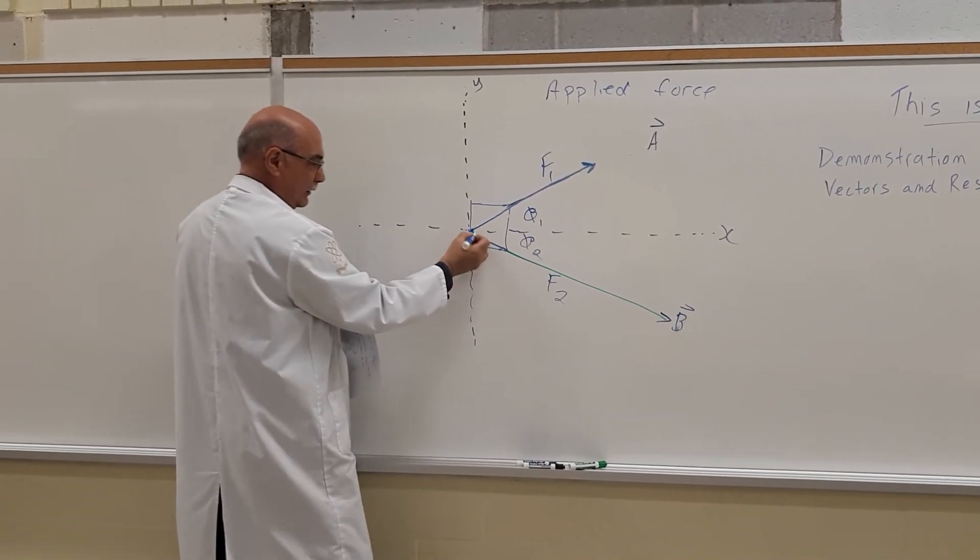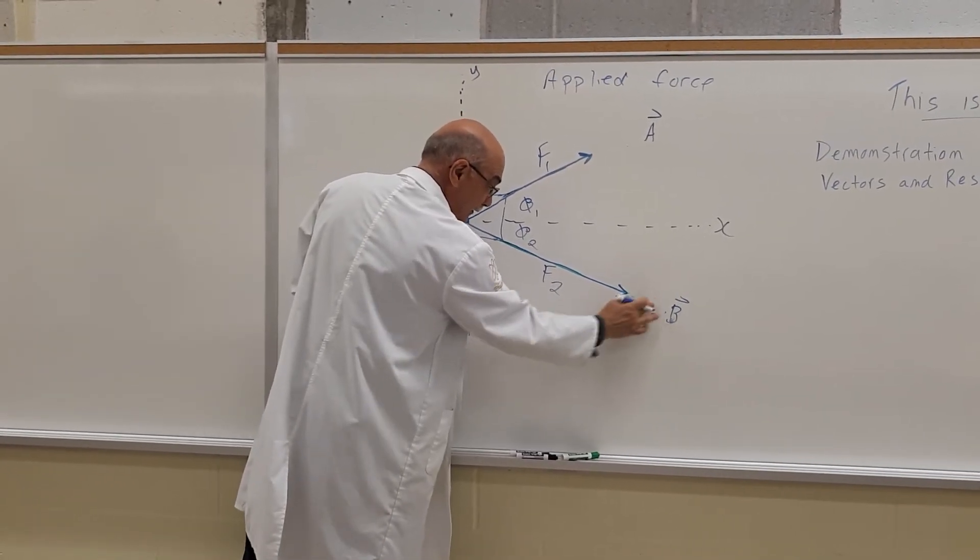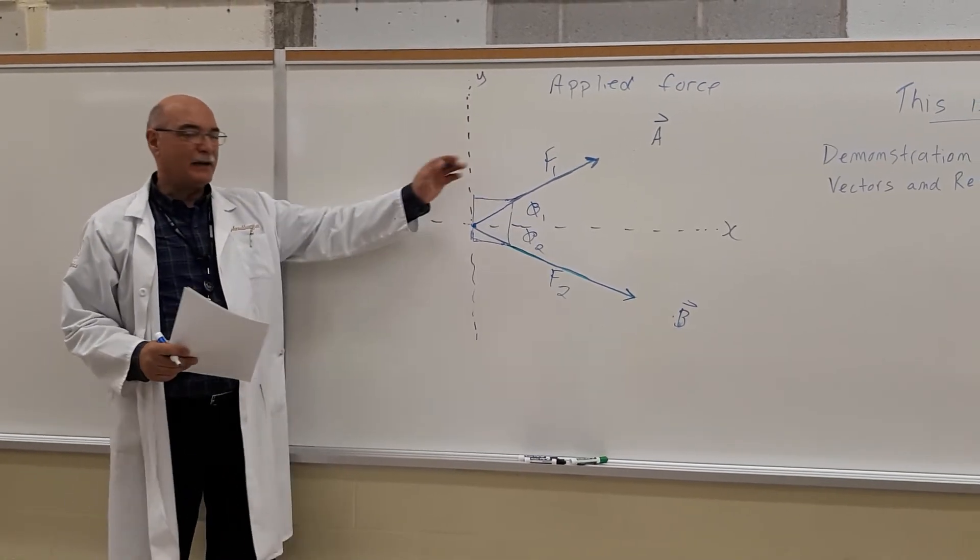And I can do the same with this vector. Pick it up and move it such that it's joining here at the origin. And I have to keep the same length, same magnitude. So it's going to be a little less. There we go. So there's vector B, and here is vector A.